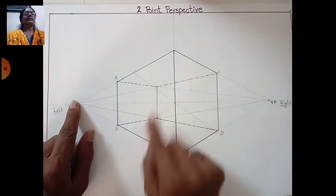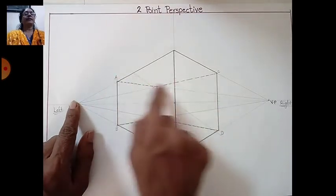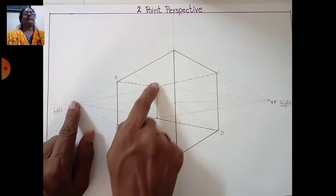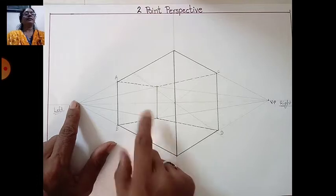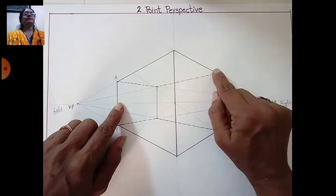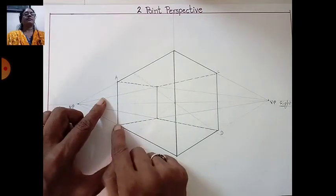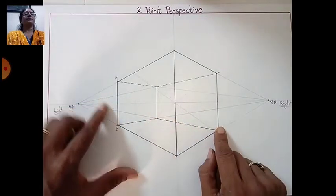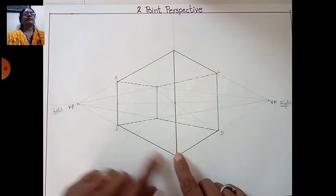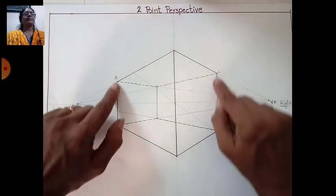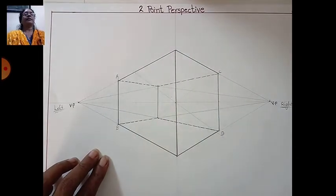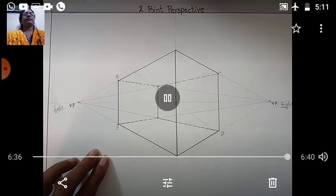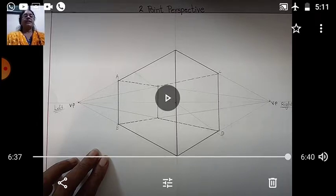Join to the vanishing point and draw the inner part in dotted lines. These are inner lines — children, remember that. This is the outer shape, the outer lines. The two-point perspective object is now ready.